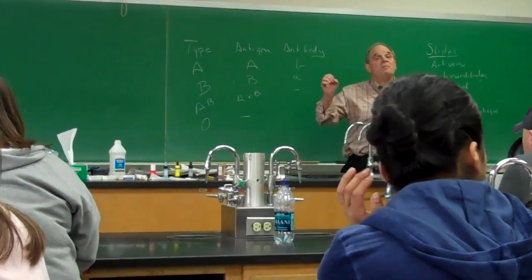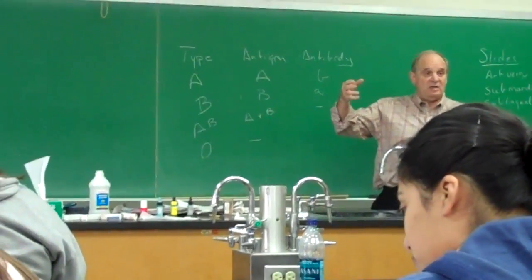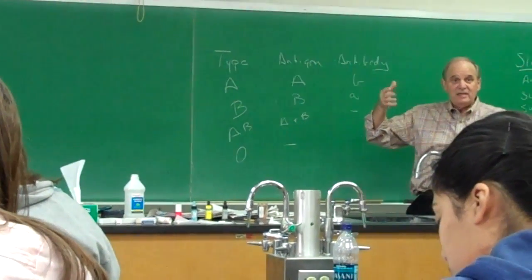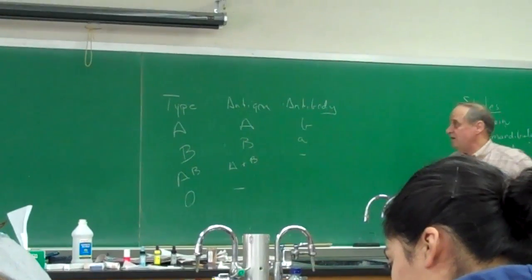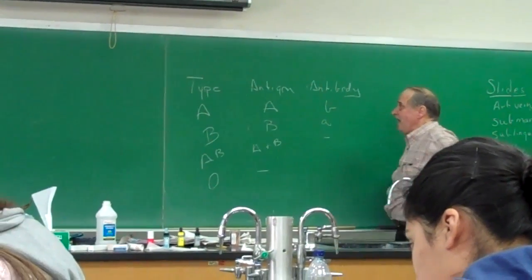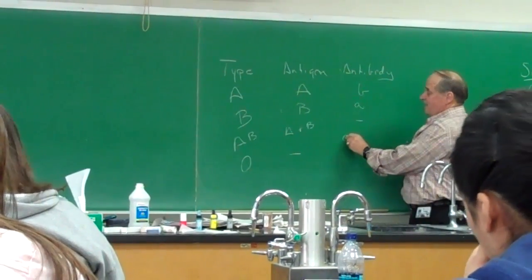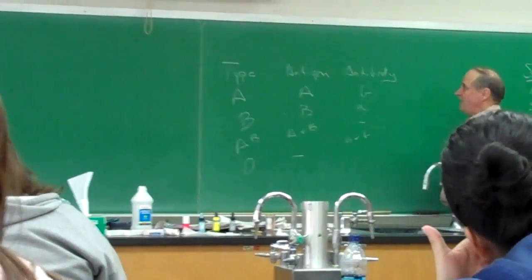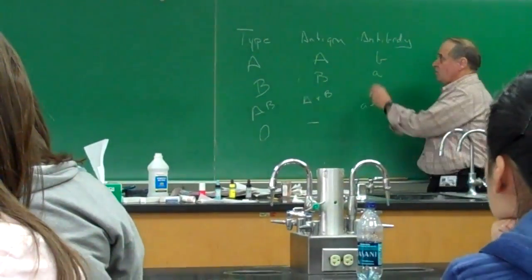They're associated with the red blood cell membrane, and the antibodies are in the plasma. Make sure you jot down that little tidbit about where the antibodies are. The whole blood type O has A and B antibodies.